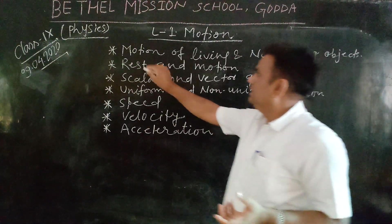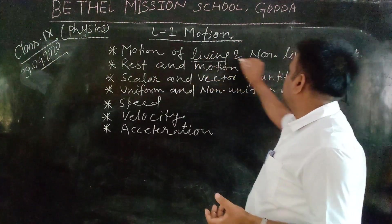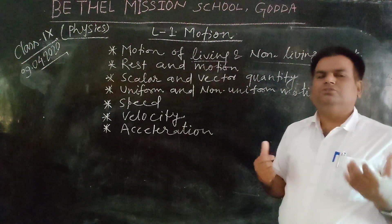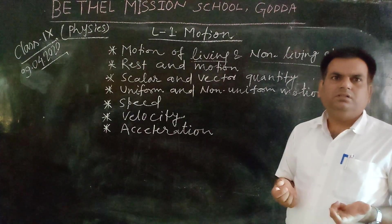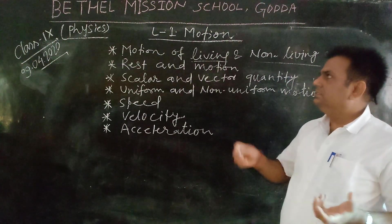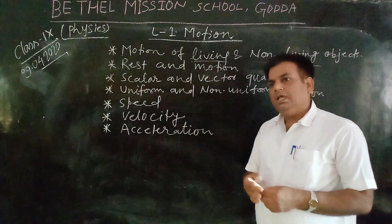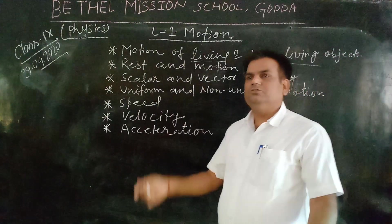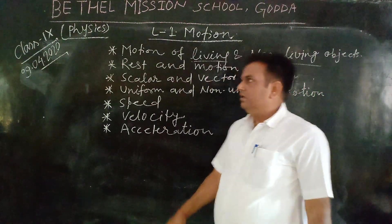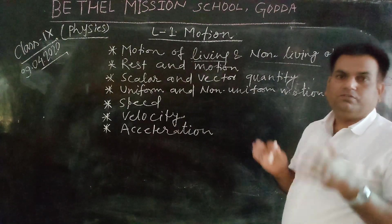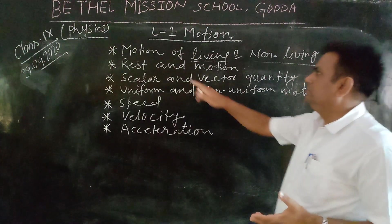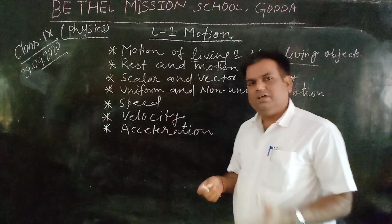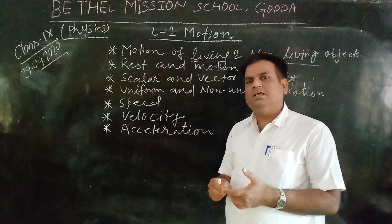Motion exists in living things and non-living things — both have motion. Living things means human beings, animals, and birds. These are living objects, and they change their position with respect to time. Non-living objects include rockets, cars, fans, and buses.